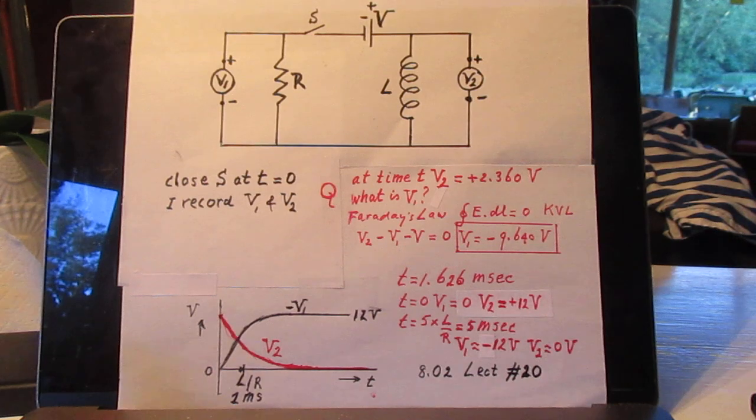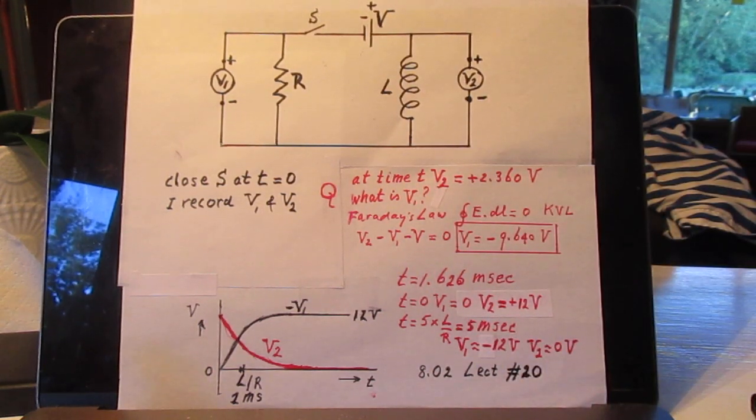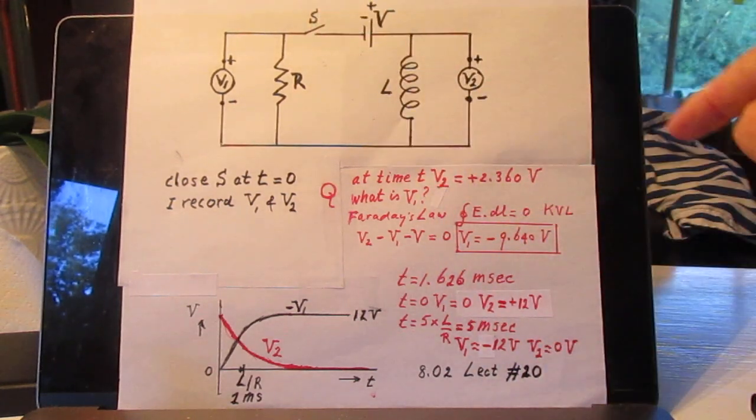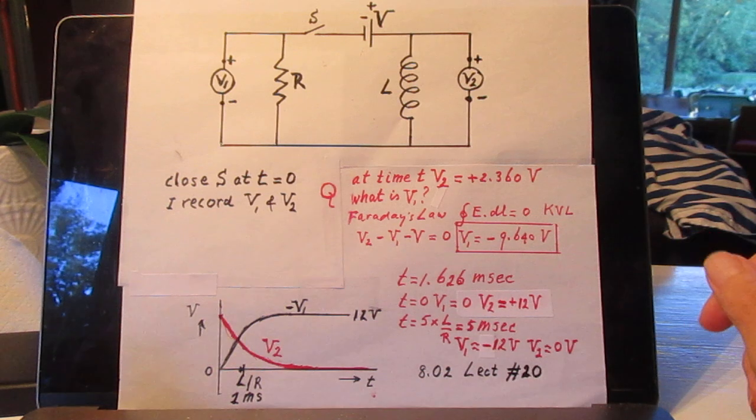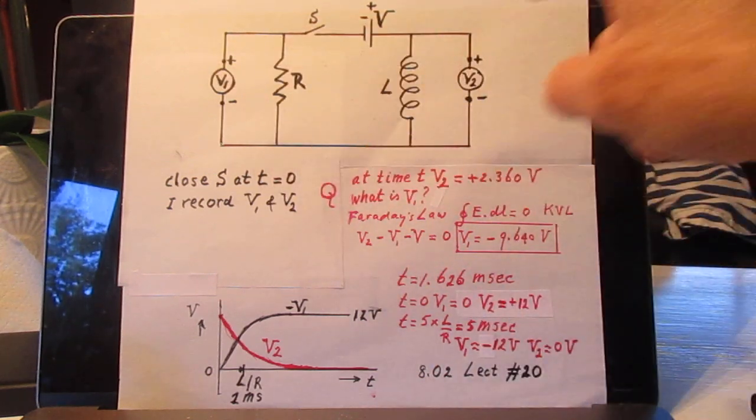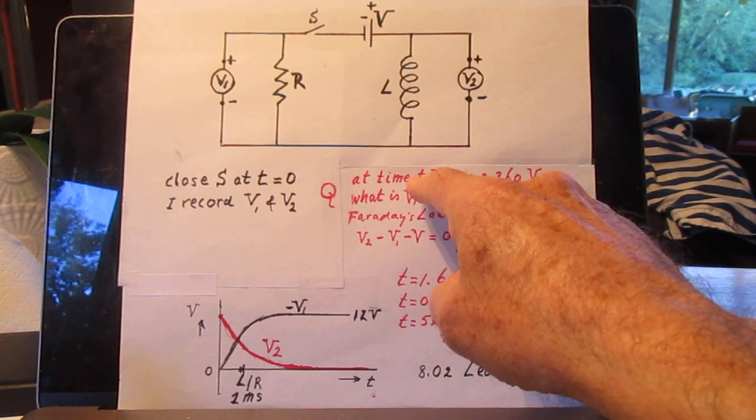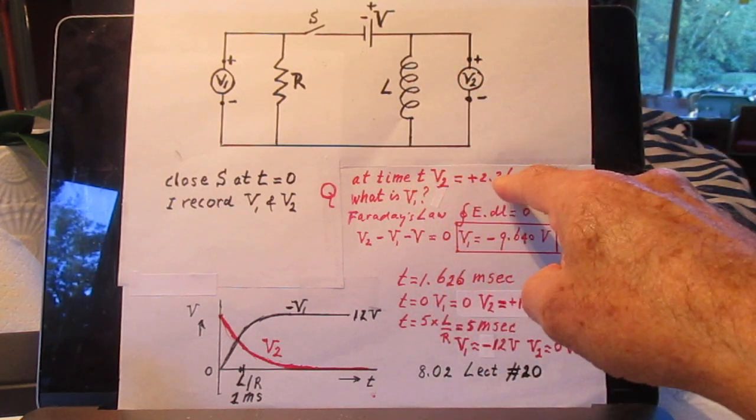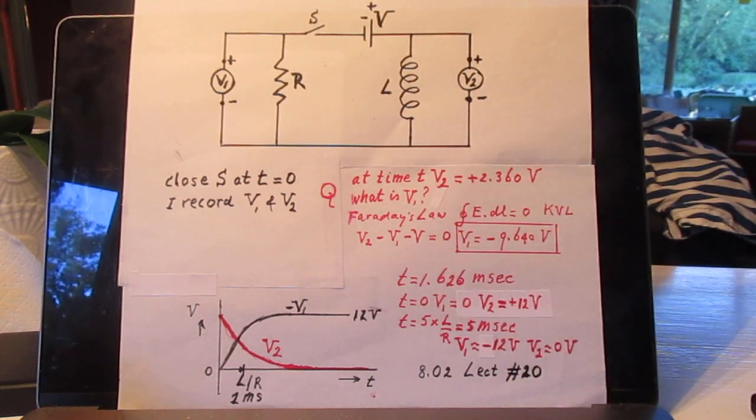This is the problem. These are the values that were given. I close this switch at time t equals 0. Also, I record at very high time resolutions of a fraction of a millisecond the values of V2 and V1. At a particular moment in time, I measure that V2 is plus 2.360 volts. And the question is, what is V1?